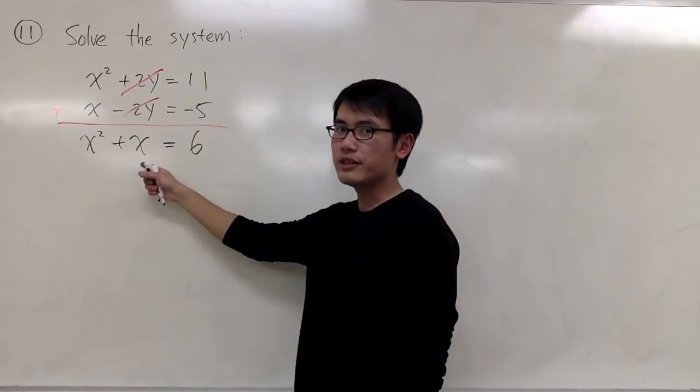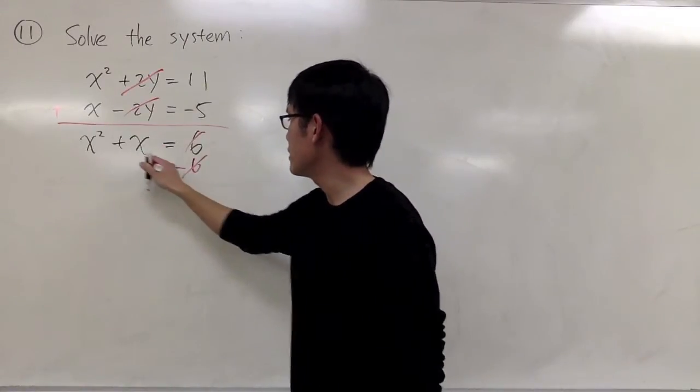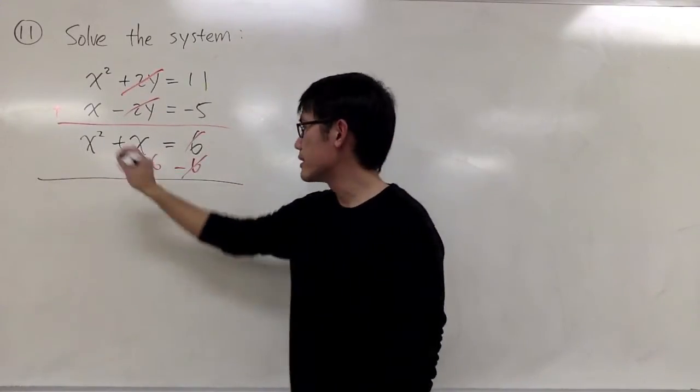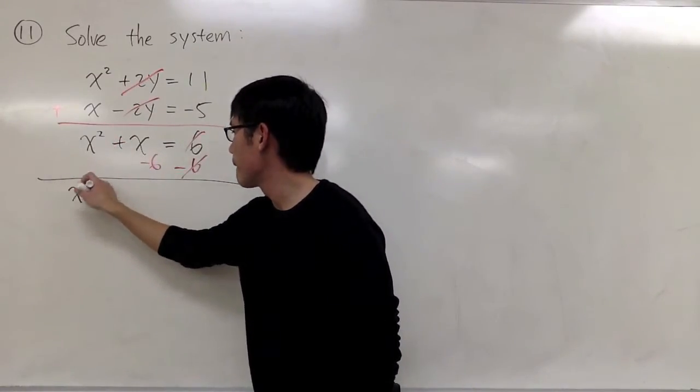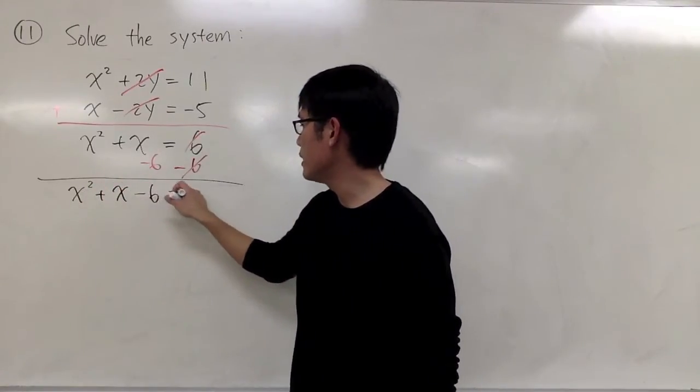It's a quadratic equation. Let's move the 6 to the other side, minus 6 right here, and minus 6 right here as well. So we will get x² + x - 6 = 0.